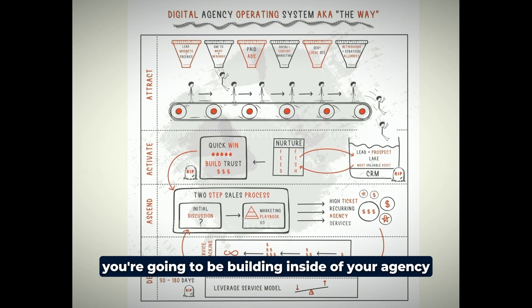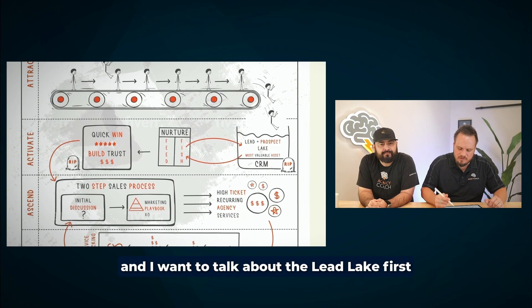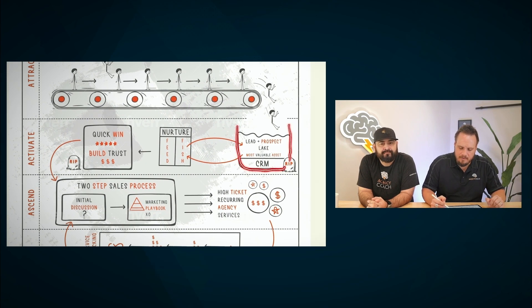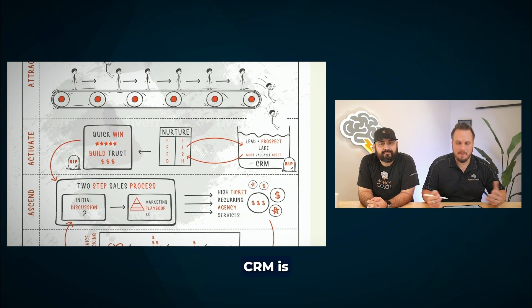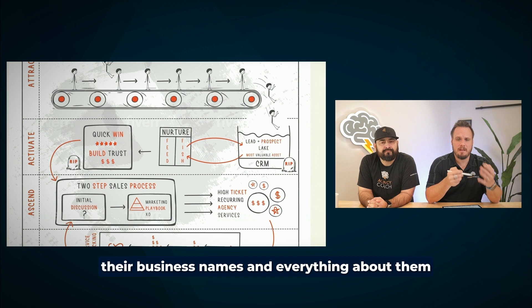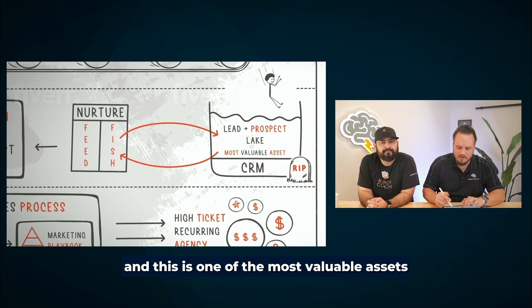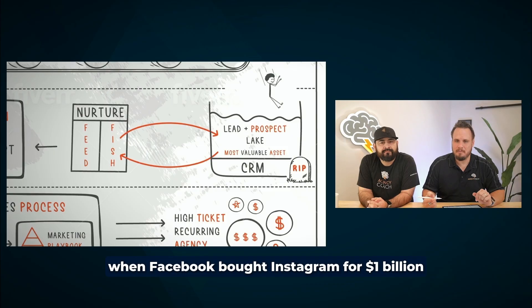AJ and I are really excited about sharing with you the digital agency operating system — this is the machine that you're going to be building inside of your agency so that you never have to sell again. Let's talk about the activation and the lead lake first. The lead lake, or prospect and lead lake, is your CRM — a piece of software that contains all the information about your leads and opportunities: their email address, phone numbers, business names, and everything about them. This is one of the most valuable assets any business can own.